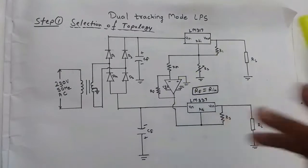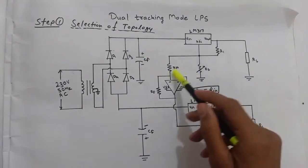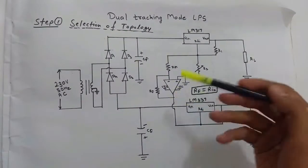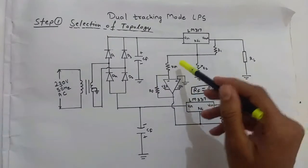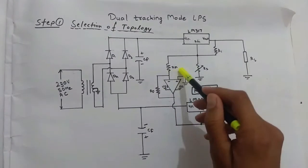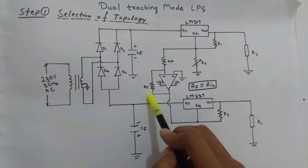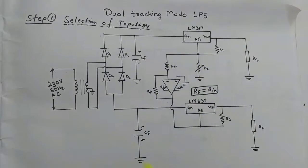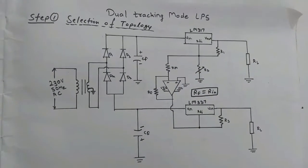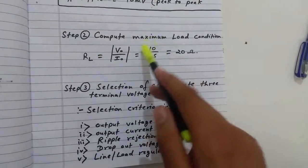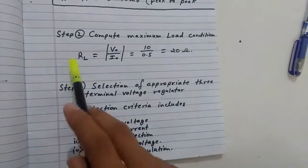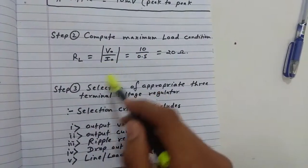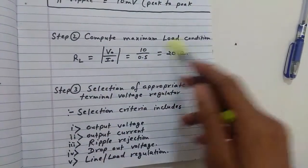The main part is the voltage follower: this op-amp is the positive voltage follower and this is the negative voltage follower. The input resistance and feedback resistance should be equal to each other. Now we compute the maximum load condition: R_L = V_out / I_out = 20 Ω.